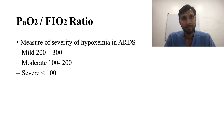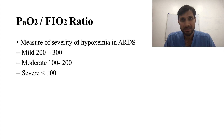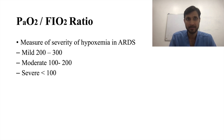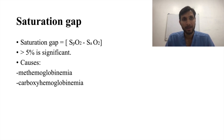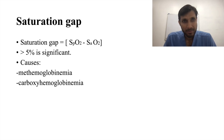The PF ratio (PaO2/FiO2) measures the severity of hypoxemia in ARDS: mild is 200–300, moderate is 100–200, and severe is less than 100. Another parameter is the saturation gap (SpO2 − SaO2); a difference greater than 5% is significant and occurs in methemoglobinemia and carboxyhemoglobinemia.